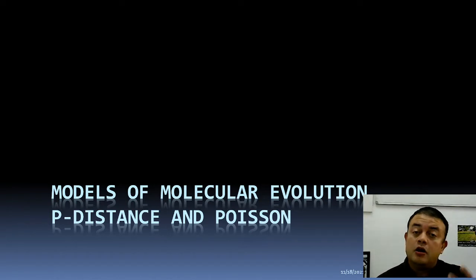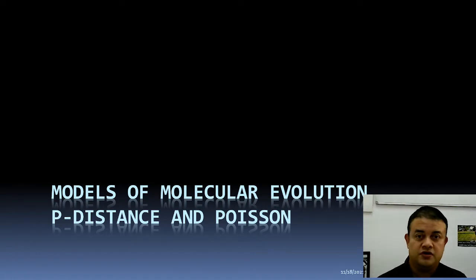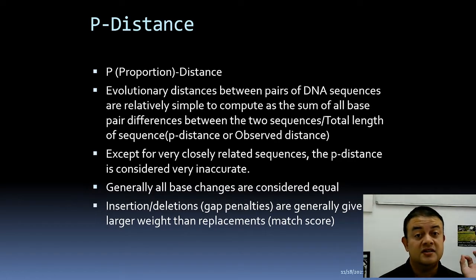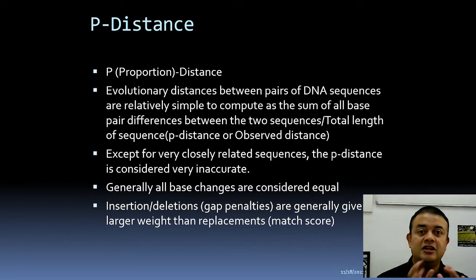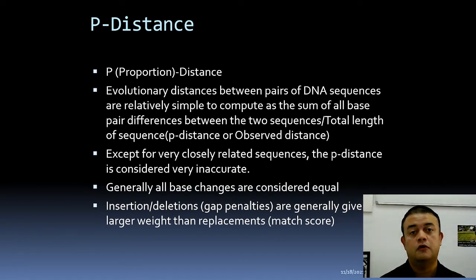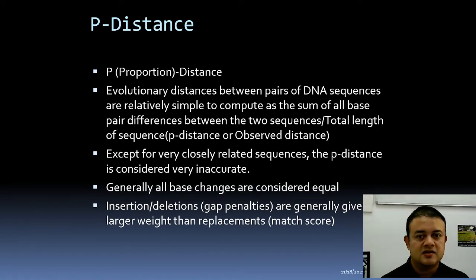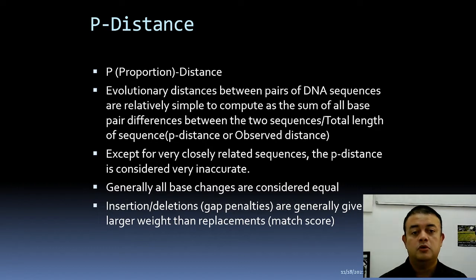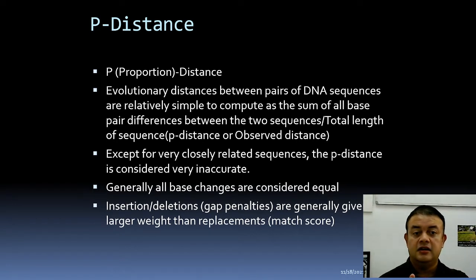There are also more complicated models that come in subsequent talks. P-distance is the simplest one. P stands for proportion — whatever differences you find are divided by the total sequence length, giving the proportion of differences, or percentage difference. Evolutionary distances between pairs of DNA sequences are computed as the sum of all base pair differences between two sequences divided by the total length of the sequence.